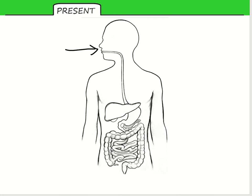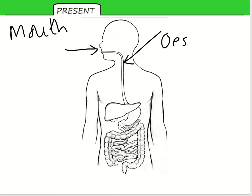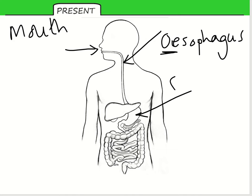We've got the mouth, which leads to a pipe — you might have called it a food pipe, but we now need to call this the esophagus. Watch the spelling because that's meant to be an E: esophagus.